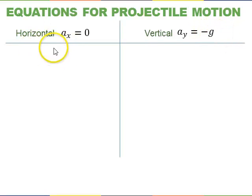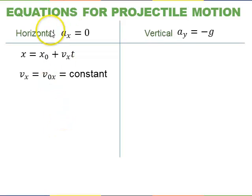So, the equations look like this. So horizontally, if the acceleration is 0, there's really only two equations for zero acceleration. The first is that the x position equals the initial x position plus v times t, and the other, it's not really an equation, but you just note that v sub x is constant. So the final velocity in the x is the same as the initial velocity.